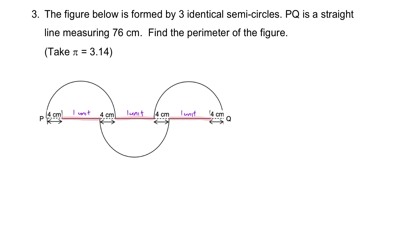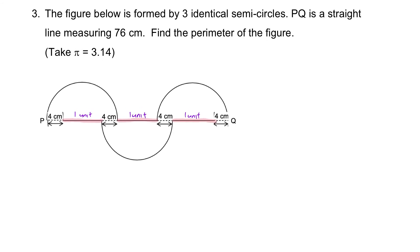Let's go back to the working. So three units will be equal to 76 centimeters minus how many? Four, eight, twelve, sixteen - minus 16 centimeters, and that will give us 60 cm.